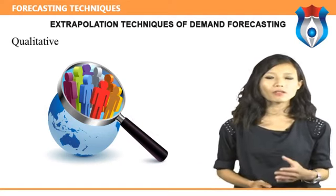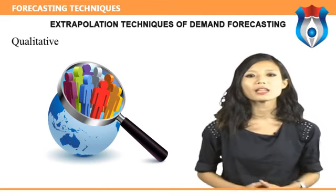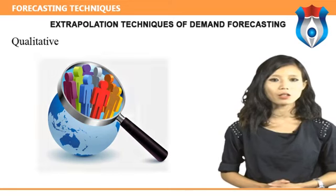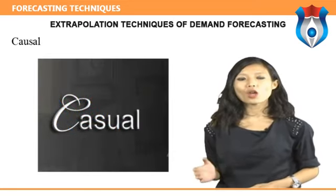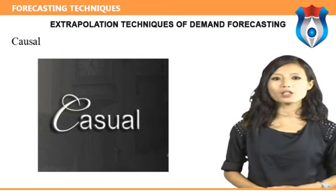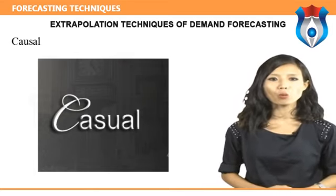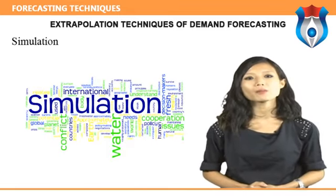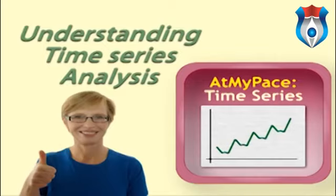Qualitative forecasting consists of gathering opinions from a variety of people and then applying their own judgment. This technique is best used when there is not sufficient historical data. Causal forecasting is the application of leading indicators to create a forecast — it assumes demand is strongly related to these indicators. Mortgage rates, for instance, strongly affect the purchase of new homes. Simulation forecasting combines the causal and time series methods and is often used when creating 'what if' scenarios.